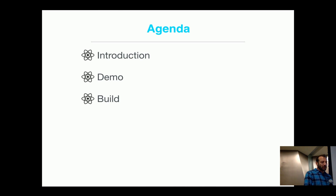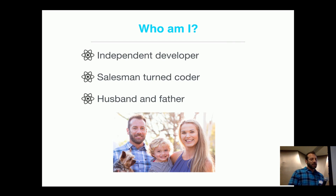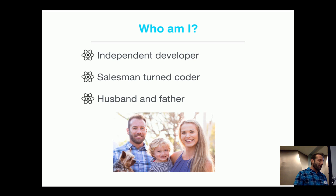My agenda is going to be to cover an introduction, then go over the build, and then we're going to have a demo. So who am I? I'm an independent developer. I'm a salesman turned coder — after an unfulfilling career in sales, I found my passion, which is coding. I've been doing that now for about a year and a couple months. Below you're going to find my wife and son, Weston. So I'm a husband and father.